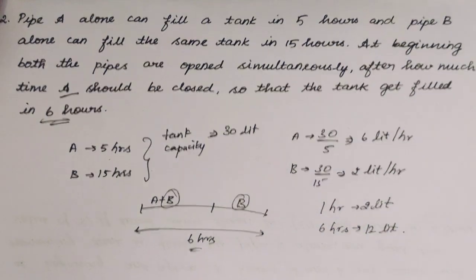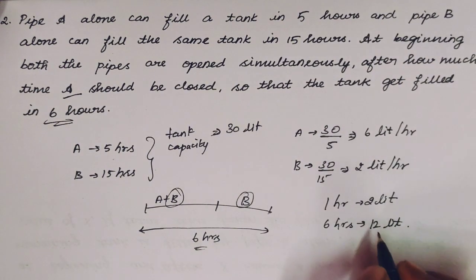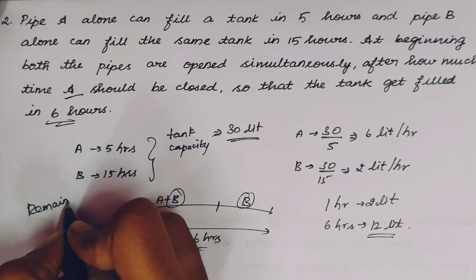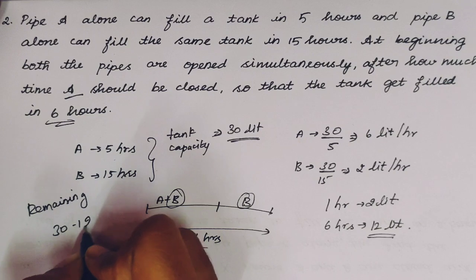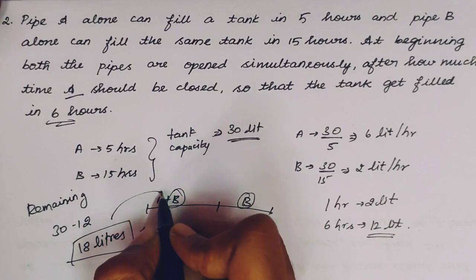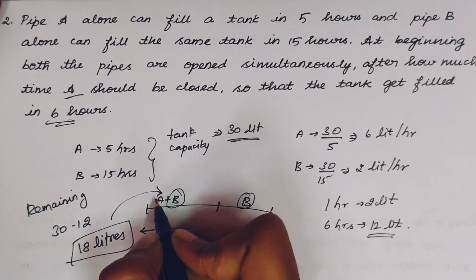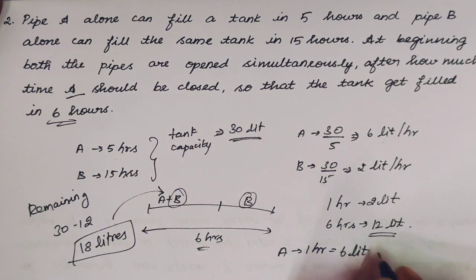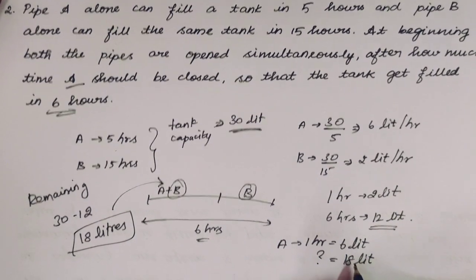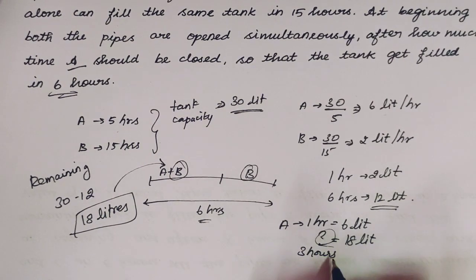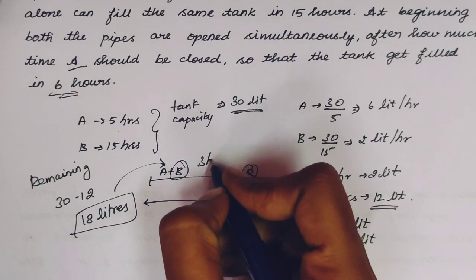Total capacity is 30 liters and B fills 12 liters, so the remaining liters filled by A are 30 minus 12 equals 18 liters. Pipe A fills 6 liters per hour. So time for A to fill 18 liters is 18 divided by 6 equals 3 hours. So the answer is 3 hours — pipe A should be closed after 3 hours.